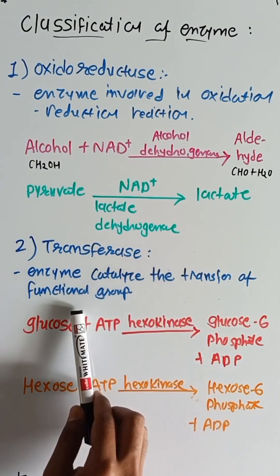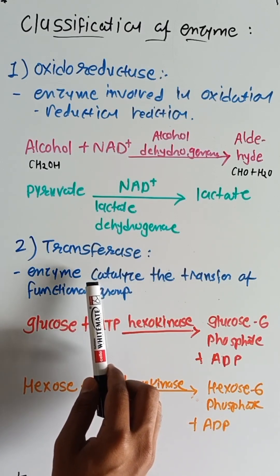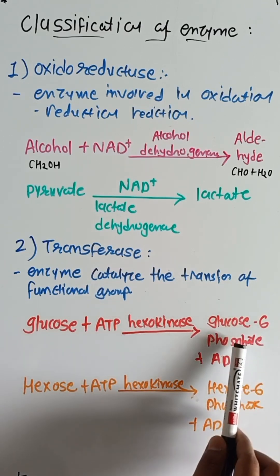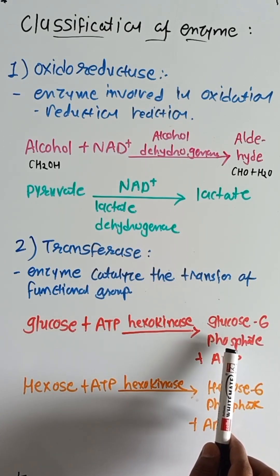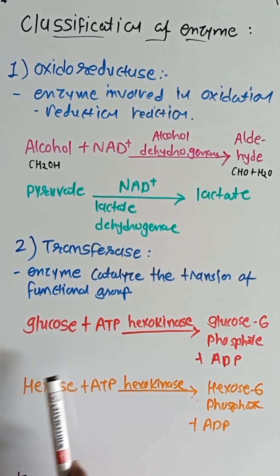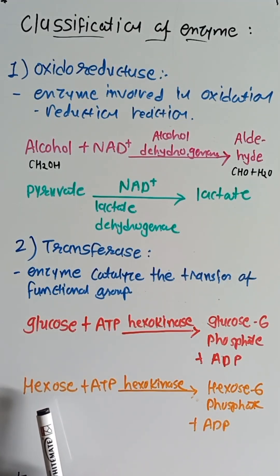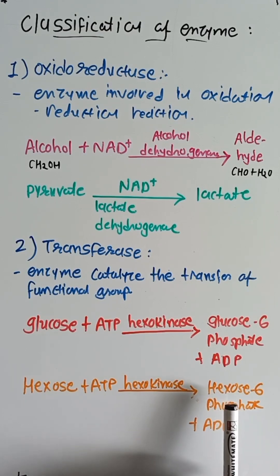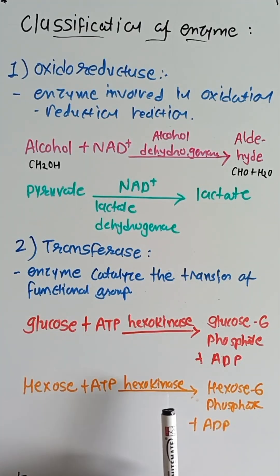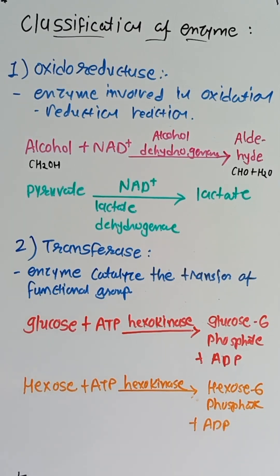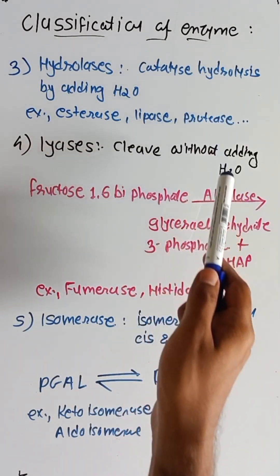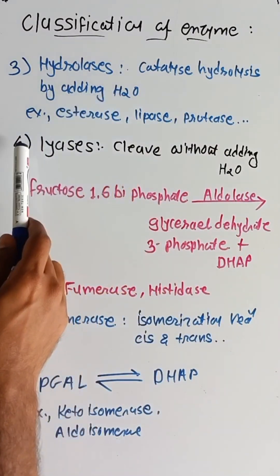Transferases are involved in transferring functional groups. For example, glucose is converted into glucose-6-phosphate — a phosphate functional group is added — by using hexokinase. Similarly, any six-carbon-containing sugar (hexose) undergoes this process, and all such reactions are classified under transferase. The third class is hydrolases, which catalyze hydrolysis by adding an H2O molecule.